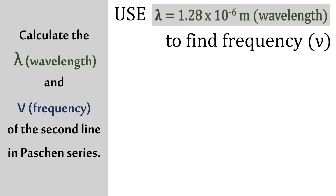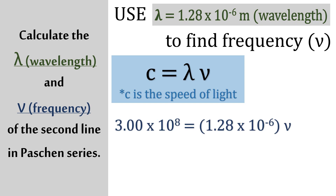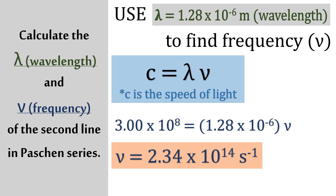Now, how do we find the frequency? We use the wavelength we just calculated together with the formula: speed of light C equals wavelength times frequency. Substituting the wavelength value from the previous calculation, you will get frequency equals 2.34×10¹⁴ per second.